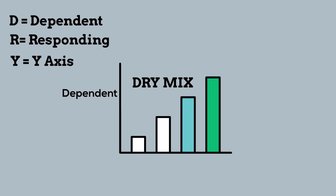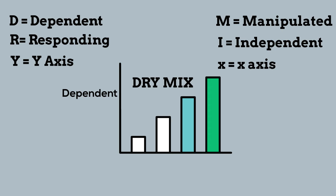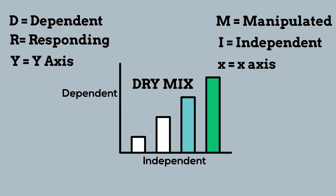MIX stands for: M is manipulating, the I stands for independent, and X stands for the X axis. So therefore, the independent variable goes on the X axis. It's just an easy way to remember which axis they both go on.